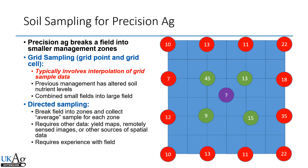When we talk about soil sampling for precision ag, we're talking about breaking a field into smaller management zones. The most common precision ag method is grid point sampling — you set up a grid, most commonly at two and a half acres, and sample at the intersection of that grid. With grid cell sampling, you actually zig-zag across that two and a half acre cell. Grid sampling works well when multiple fields are combined and previous management has altered soil nutrient levels. But there are some real drawbacks to grid sampling, which I'll cover in a moment.